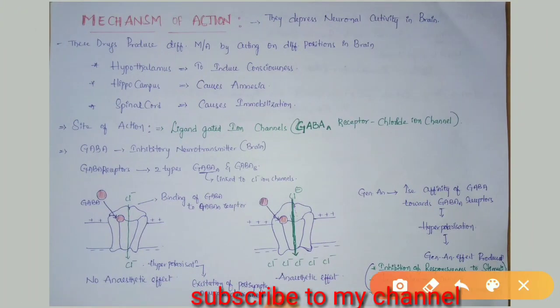The mechanism of action of general anesthetic agents involves depressing neuronal activity in the brain. These drugs mainly act on the central nervous system and depress neuronal activity. They produce different mechanisms of action by acting on different positions in the brain.